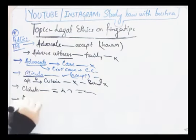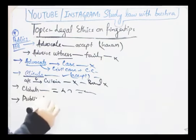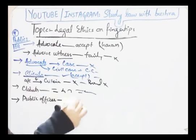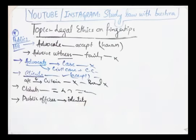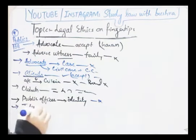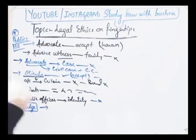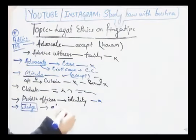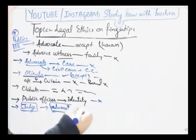Agla rule: Advocate agar kisi public officer ke samne appear ho raha hai, kisi public body ke samne ja raha hai, unse apni professional capacity mein communicate kar raha hai, to uske liye zaroori hai ke sabse pehle woh apna identity disclose karega ke 'mein ek advocate hoon aur mein falan cheez ke silsile mein aapse yahan communicate karne aaya hoon.' Agla rule: 'An advocate should not accept employment in any matter which he has previously acted in judicial capacity.' Agar koi advocate pehle koi public office hold karta tha ya public employment mein tha, to apni retirement ke baad woh us employment se related kisi bhi matter ko investigate nahi kar sakta, na hi is tarha ki employment accept kar sakta hai.